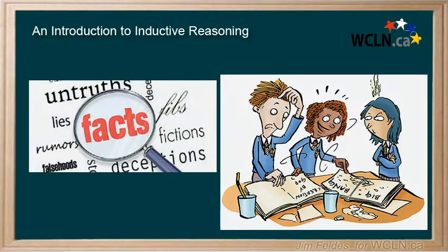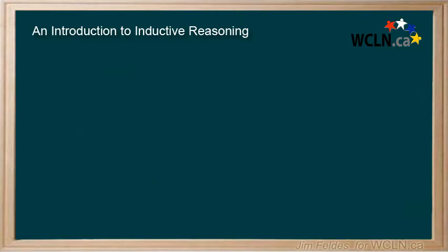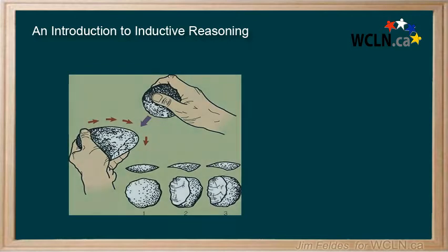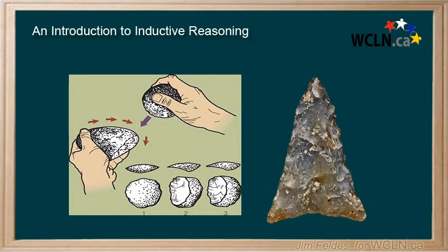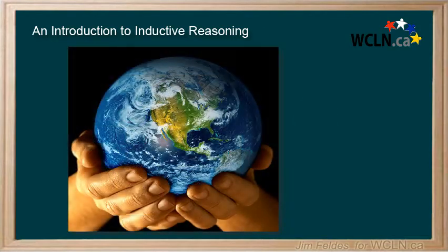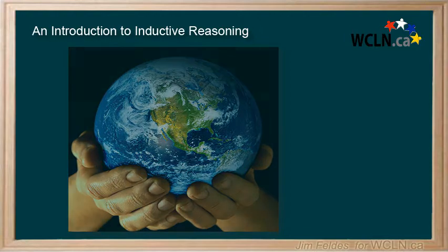We even suggested that our success as a species is linked to our ability to reason, as it has given us a survival advantage, like observing the behavior of striking rocks together. That survival advantage may have given us a little too much influence over the future of the planet. Reasonable decisions about its care are paramount.